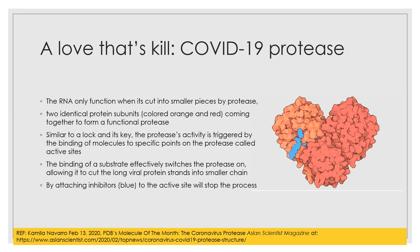Once inside the cell, the RNA can only function when it is cut into smaller pieces by a protease. This COVID-19 protease consists of two identical protein subunits — colored orange and red as you can see — coming together to form a functional protease.